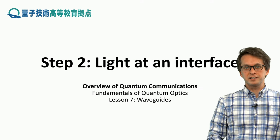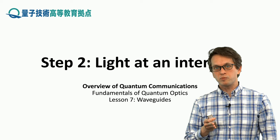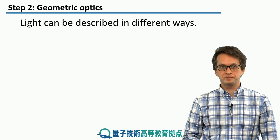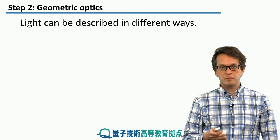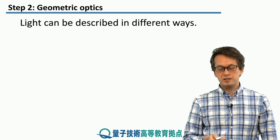Step two: light at an interface. Let's see what happens when light is trying to go from one medium into a different medium. Before that, let's see how light can be described.